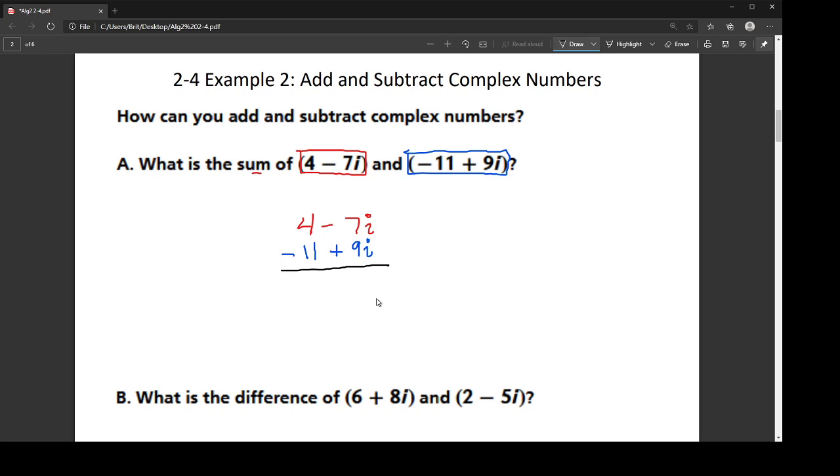So if I add down, 4 minus 11 is negative 7, and negative 7i plus 9i is a positive 2i. And that's my solution. Now, many kids are able to do this with mental math and just gather your like terms. Many kids are able to go, oh, there's the negative 7, and then here is the plus 2i.